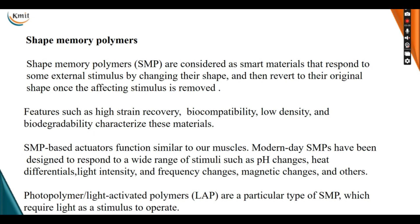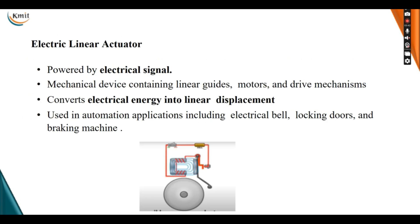The next type is shape memory polymers, also called SMPs. SMPs are considered smart materials that respond to some external stimuli by changing their shape and reverting to their original shape once the stimuli is removed. Features such as high strain recovery, biocompatibility, low density, and biodegradability characterize these materials. SMP-based actuators function similarly to our muscles. Modern-day SMPs have been designed to respond to a wide range of stimuli such as pH changes, heat differentials, and light intensity and frequency changes.